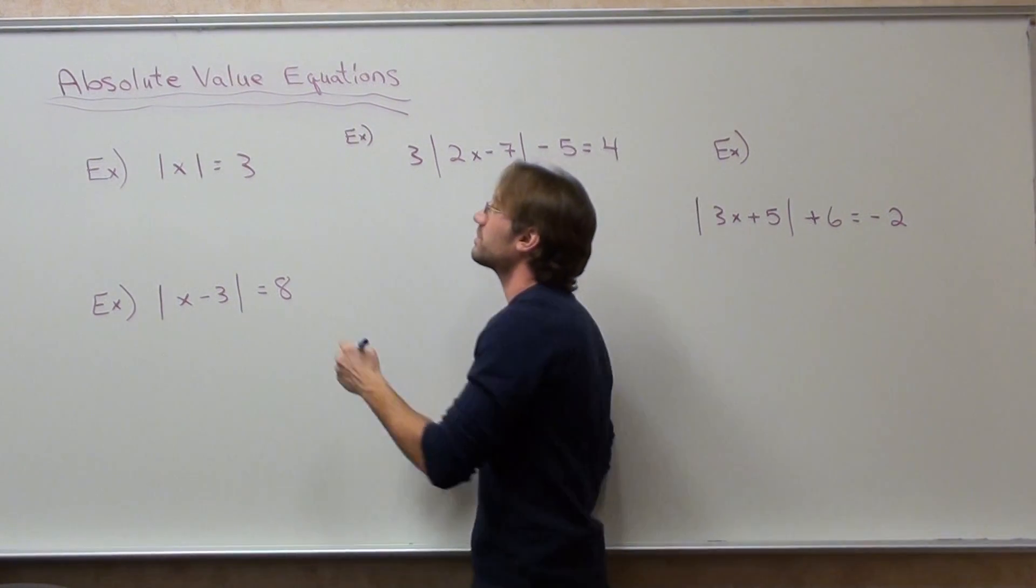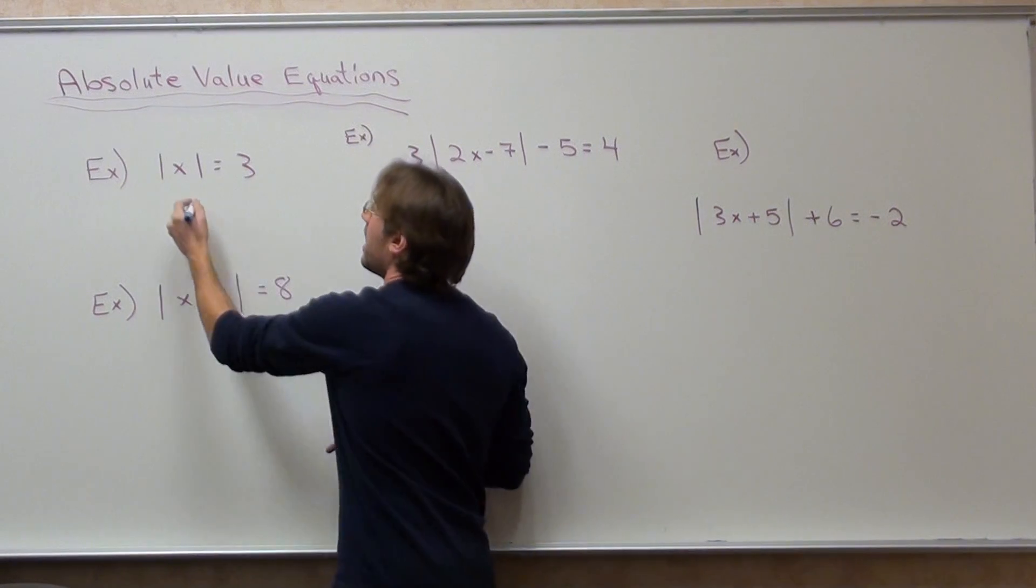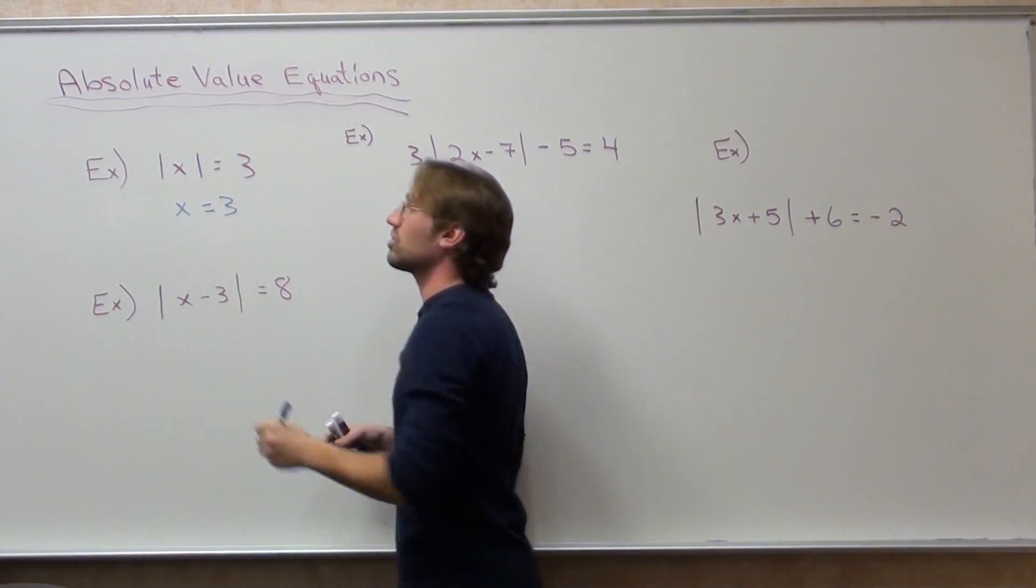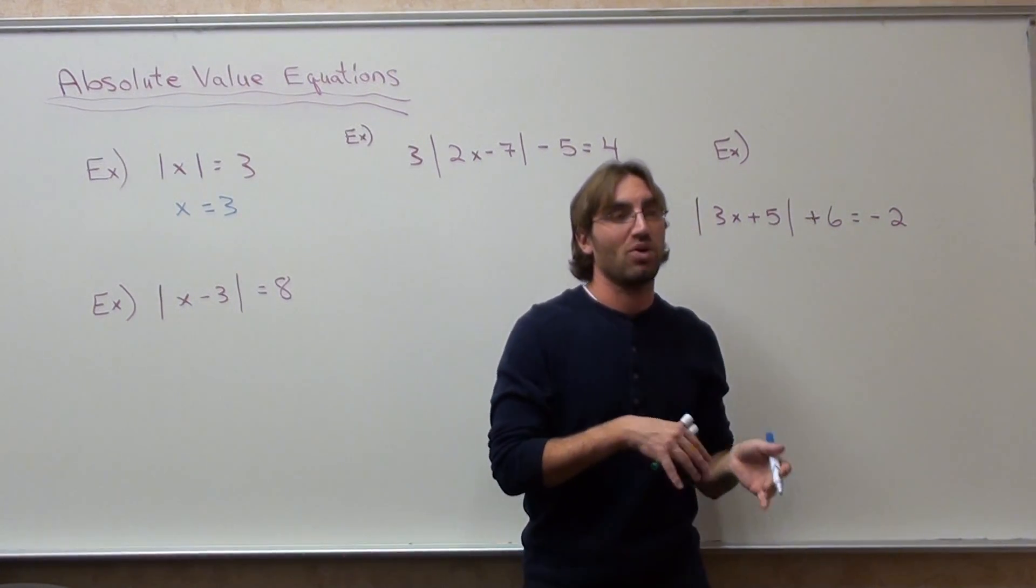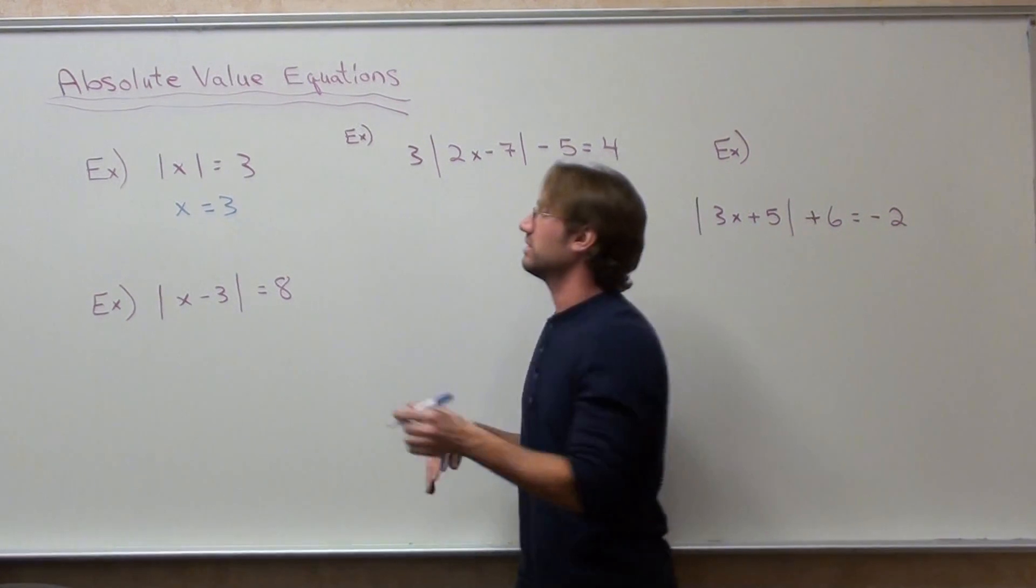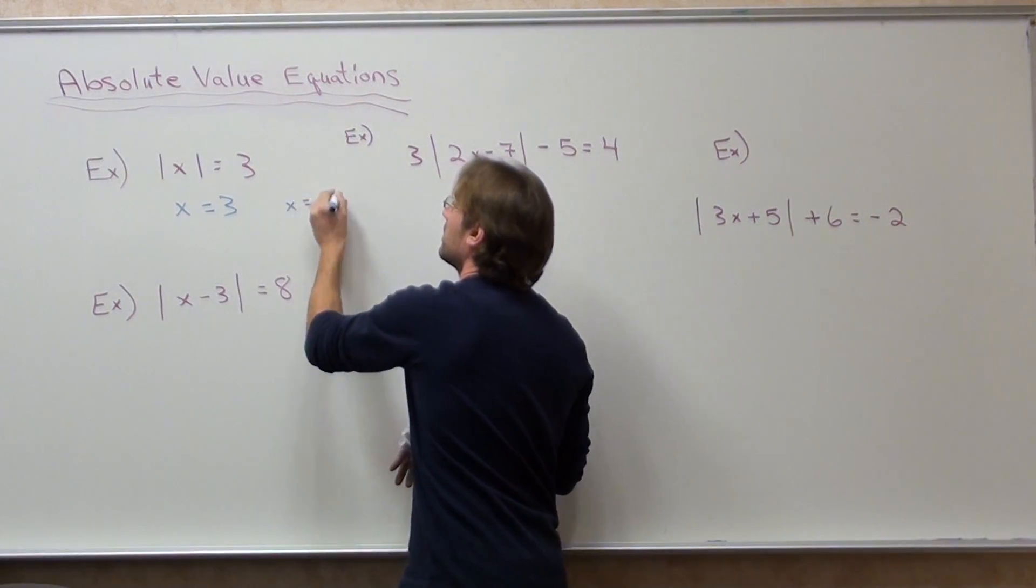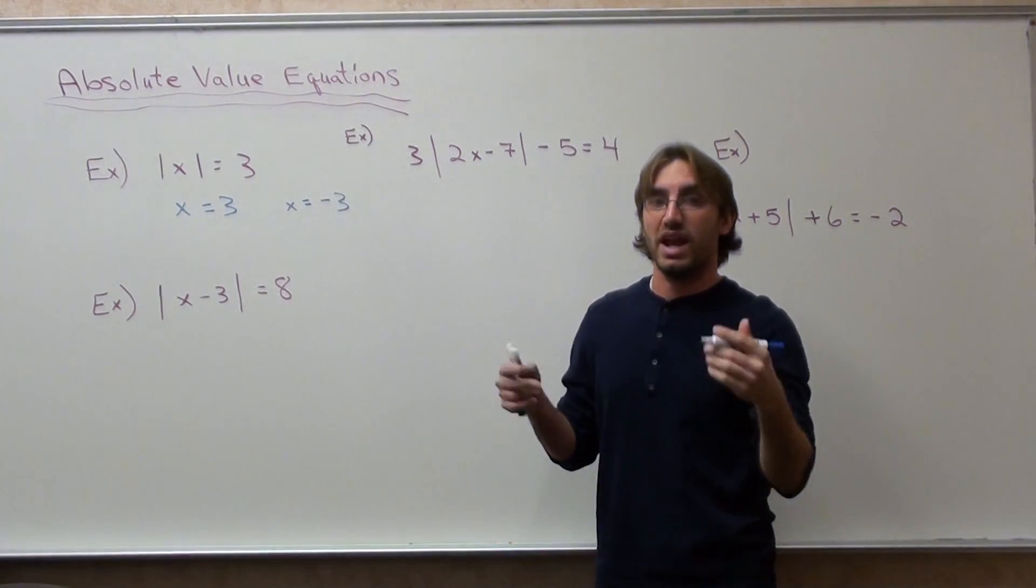Here we go. So you say that x equals three or x equals its opposite or the other distance on the number line from zero. X equals negative three. And they both work.